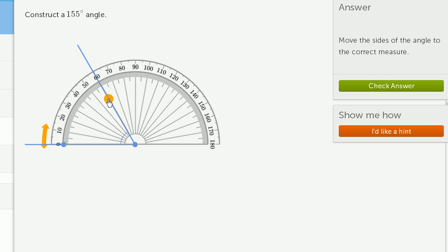10, 20, 30, 40, 50, 60, 70, 80, 90. That gets us to a right angle. Then we'll start getting into obtuse angles. 100, 110, 120, 130, 140, 150.